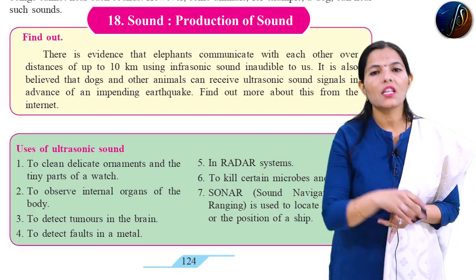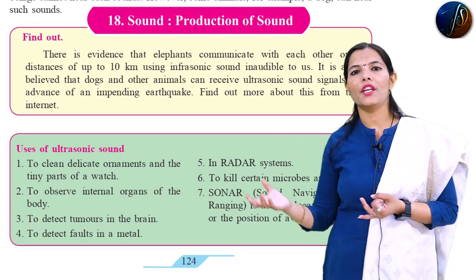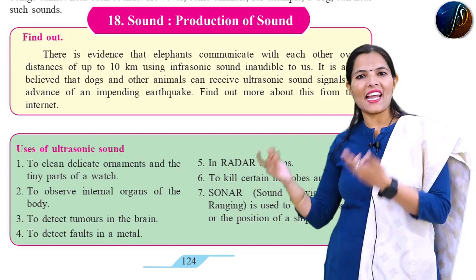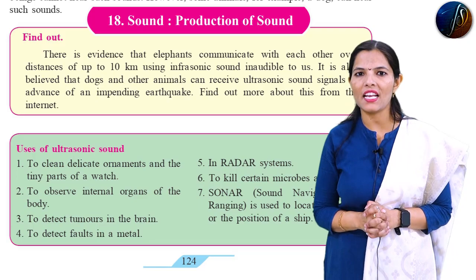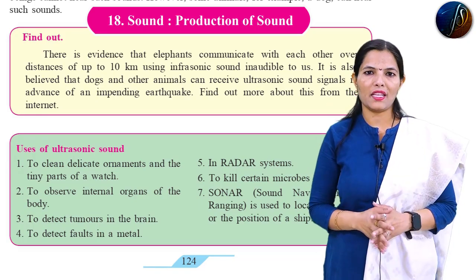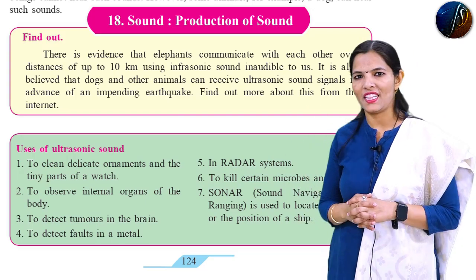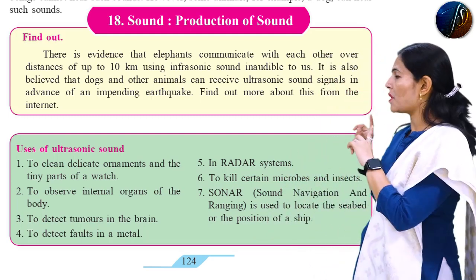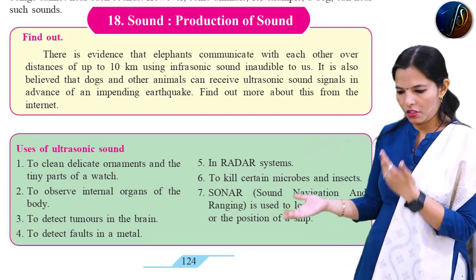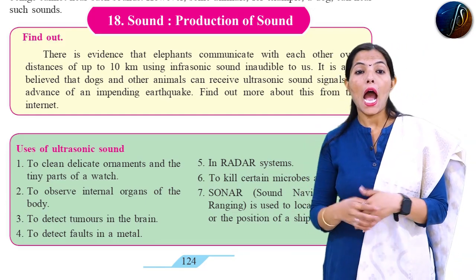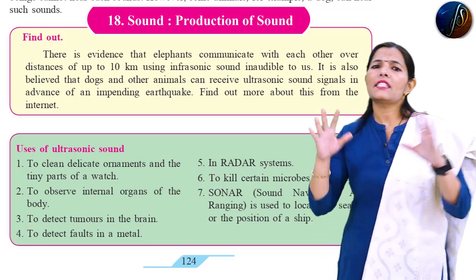To recap: infrasonic sound has a frequency less than 20 Hz, audible sound has a frequency between 20 Hz and 20,000 Hz, and ultrasonic sound has a frequency greater than 20,000 Hz. Special animals like cats, dogs, and bats can perceive ultrasonic sound. These animals can also sense natural disasters like earthquakes before they occur.